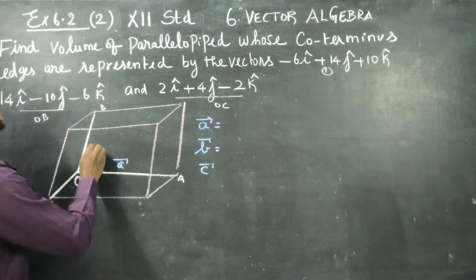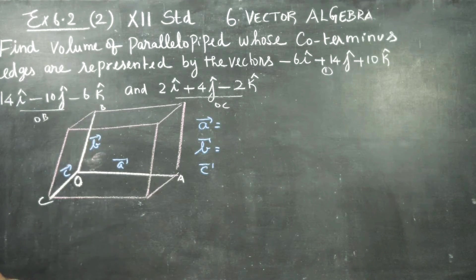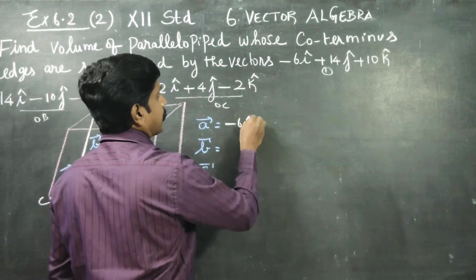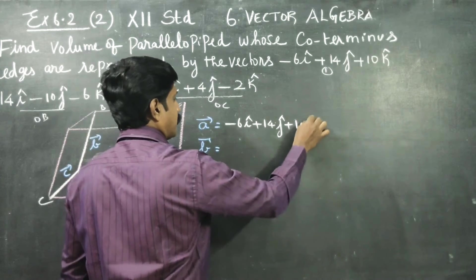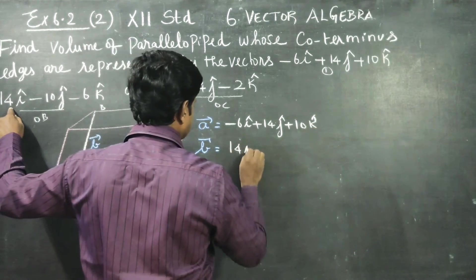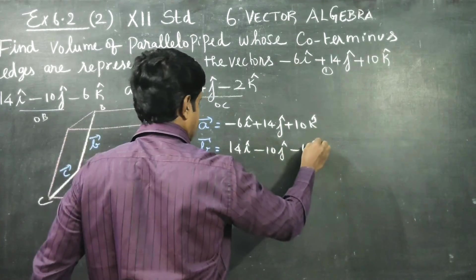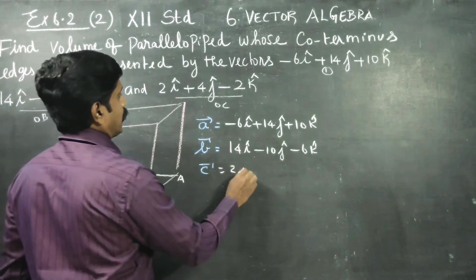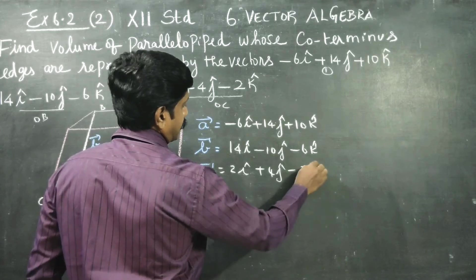Let it be a vector, b vector, and let this be c vector. What is my a vector? a vector will be minus 6i plus 14j plus 10k, and b vector is 14i minus 10j minus 6k, and c vector, the final vector will be 2i plus 4j minus 2k. So the question is find the volume of the parallelepiped.